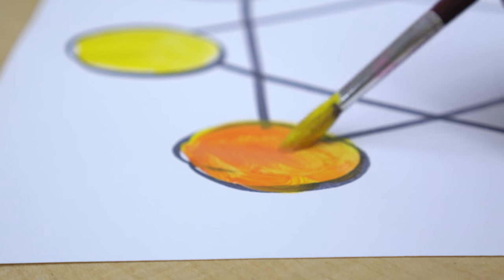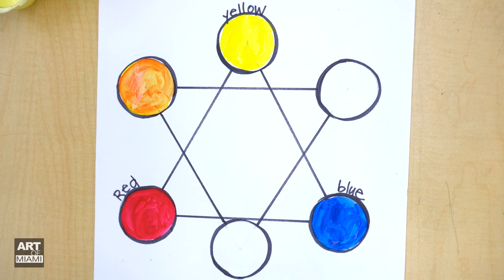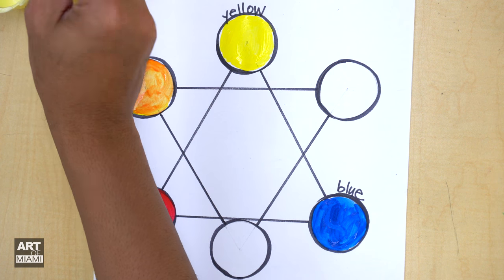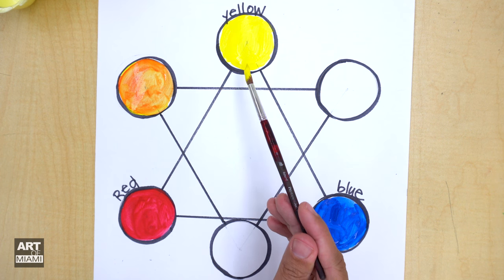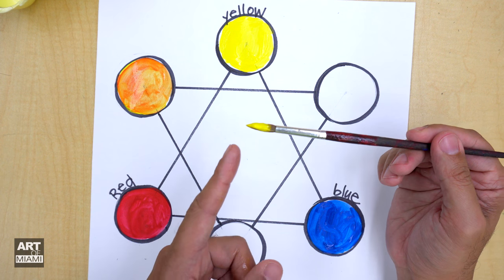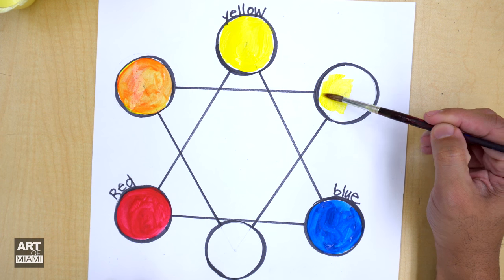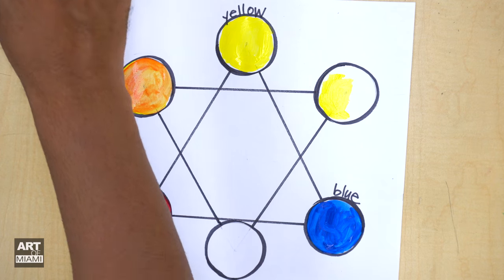All right, I think we're ready to make the next color, green. So to make green, green is between yellow and blue. So we're going to put yellow first, and then blue. So yellow first, and then blue. Here we go. Good. Let me get some more.